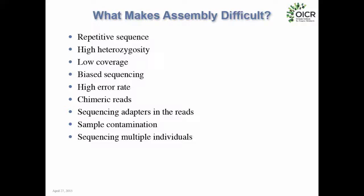A special case is sequencing multiple individuals. When a single organism doesn't yield enough DNA, people sometimes sequence multiple individuals, but this increases effective heterozygosity since they all have slightly different genomes — making assembly much harder. I almost always suggest never sequencing multiple individuals unless they're completely inbred with no heterozygosity, if you want a good assembly.